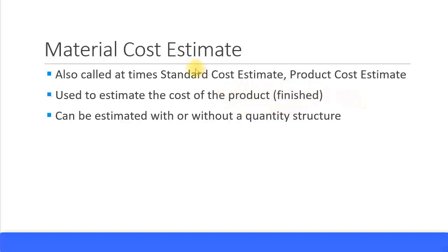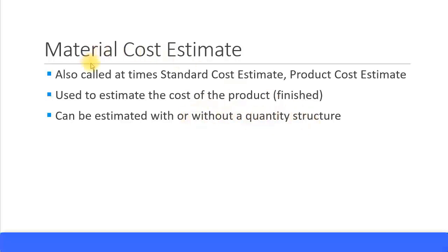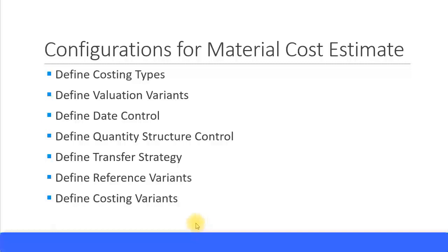The material cost estimate can be done with or without a quantity structure. By quantity structure, we mean a structured list specifying how much quantity you need from each item. There is a bit more work involved when doing it with quantity structure compared to without. We will look at this in more detail — what it means to do it with quantity structure and how to do it without quantity structure.